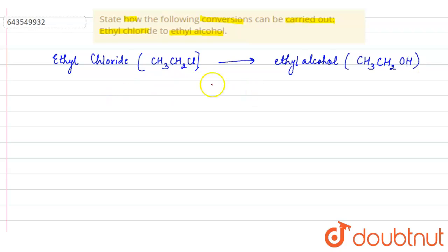We can easily do this by treating ethyl chloride with aqueous solution of potassium hydroxide. So when ethyl chloride, that is CH3CH2Cl, is treated with aqueous solution of potassium hydroxide.